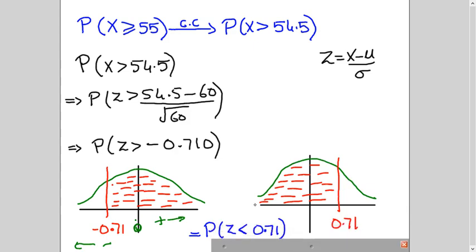If I take the symmetrical value of minus 0.71, it will be on the positive side — because this is a bell-shaped symmetrical graph about the y-axis. The area on the left-hand side of minus 0.71 equals the right-hand side area of plus 0.71. So I can say that probability of z greater than minus 0.710 equals probability of z less than 0.71. I will use this because the table gives values for the left-hand side area.